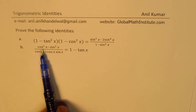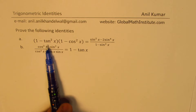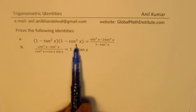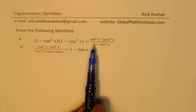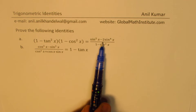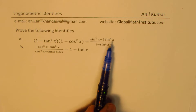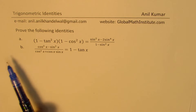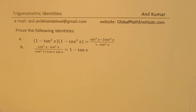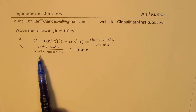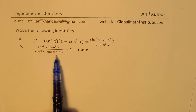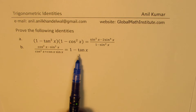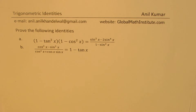We will prove two identities here. The first one is: 1 minus tan squared x, times 1 minus cos squared x, equals sin squared x minus 2 sin to the power of 4x, over 1 minus cos squared x. You can always pause the video, answer the question, and then look into my suggestions.